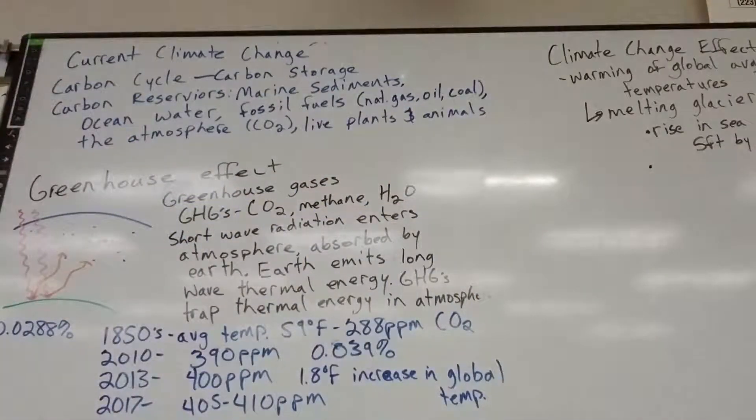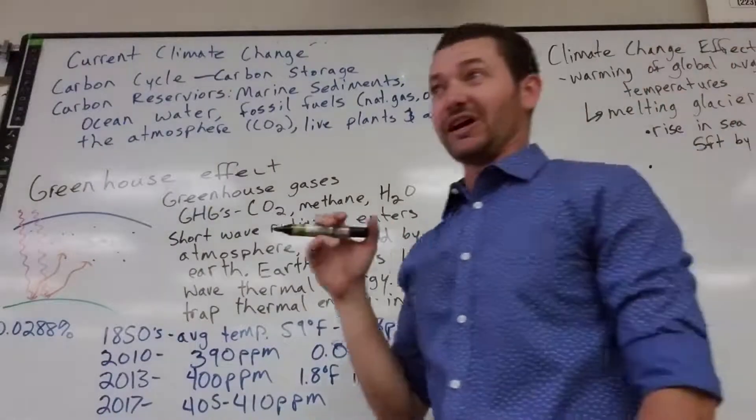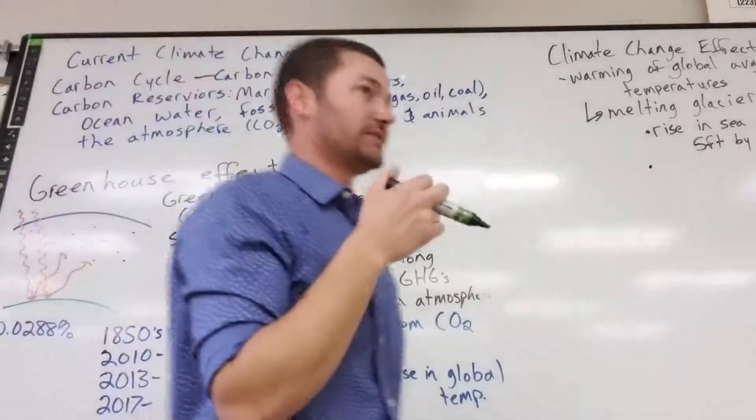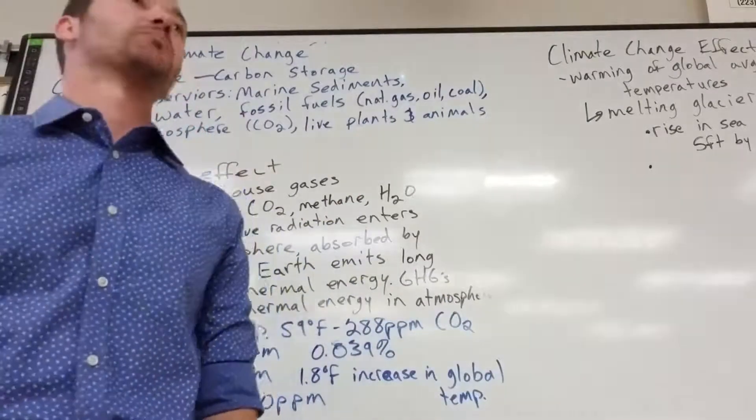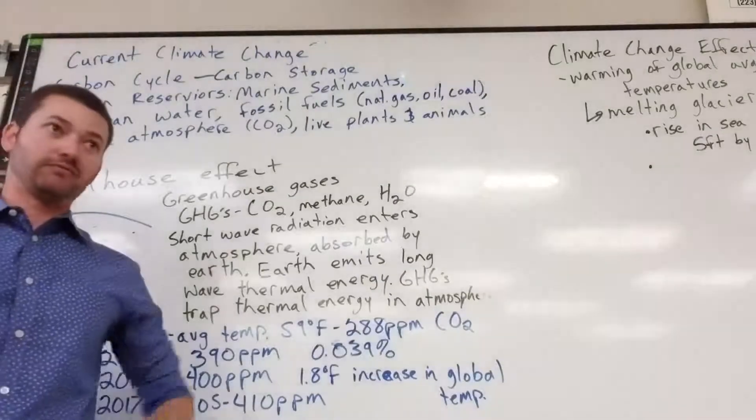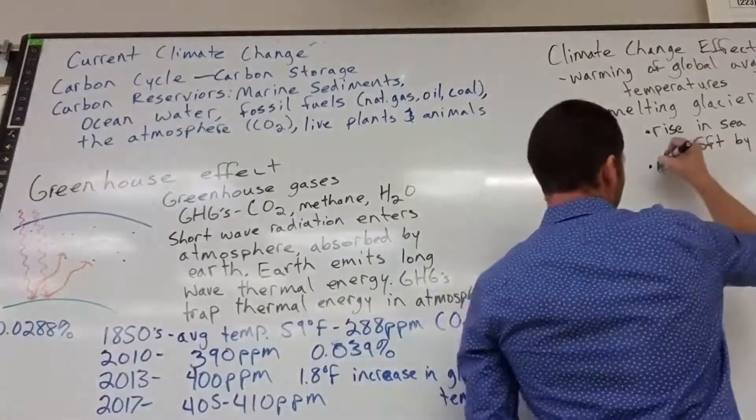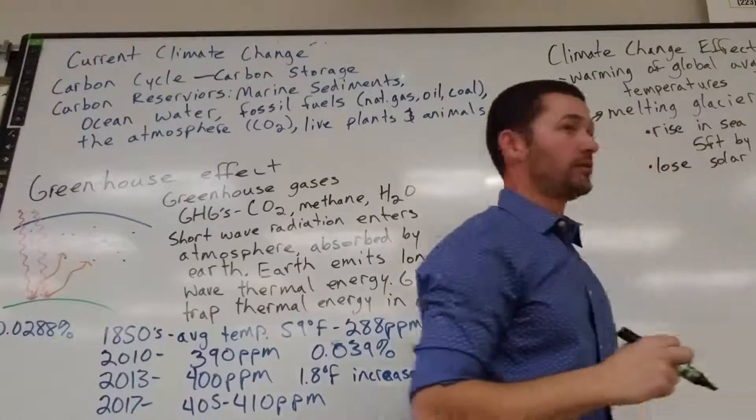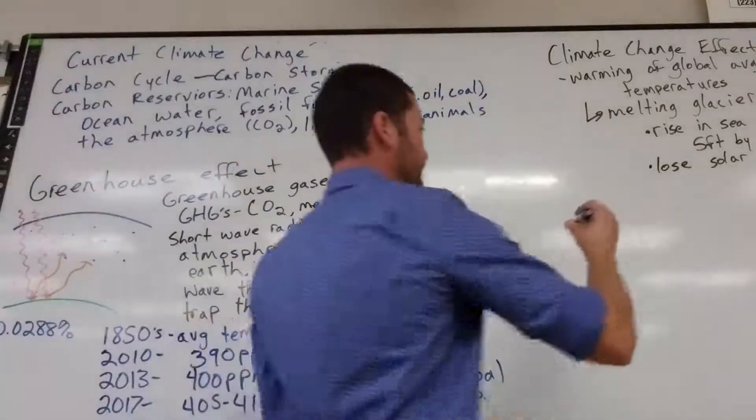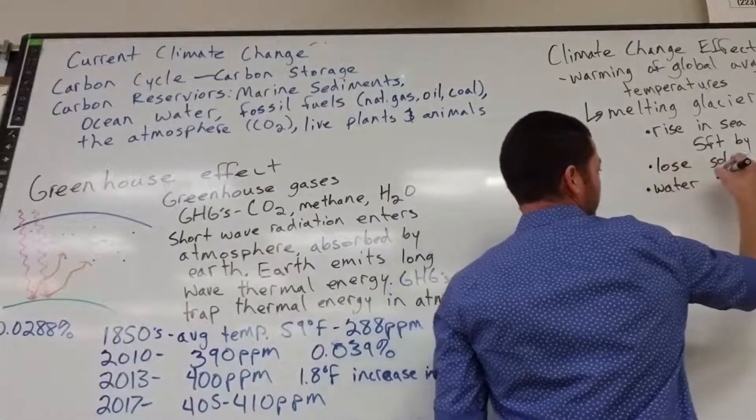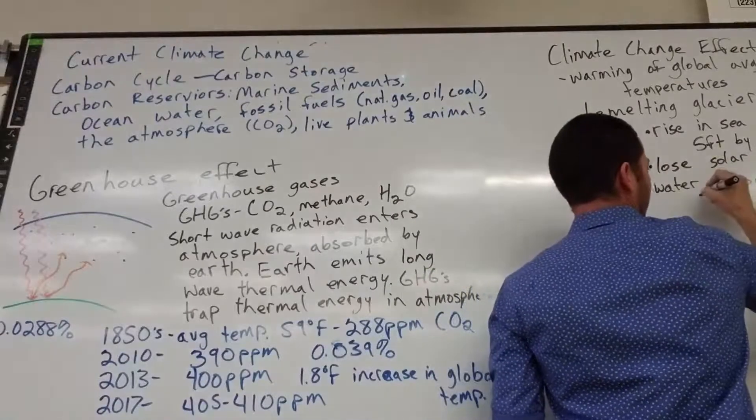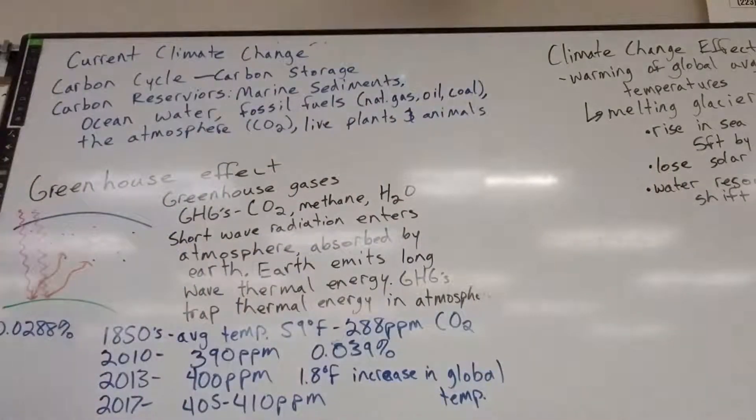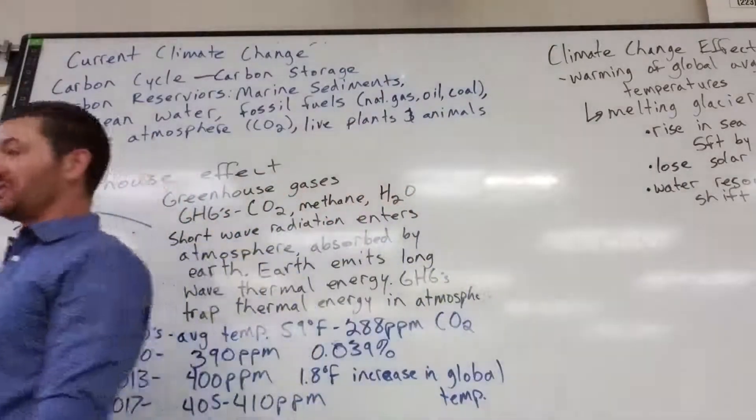So melting glaciers, rise in sea level. When we were talking about albedo and the reflection of incoming solar radiation, we talked about how having ice on Earth reflects solar energy back into space. So it actually cools the Earth off to have ice. So when you lose glaciers, you're losing a cooling surface and replacing it usually with water, which absorbs more energy and turns into a heating surface. So lose solar reflection.